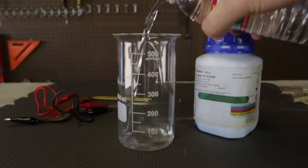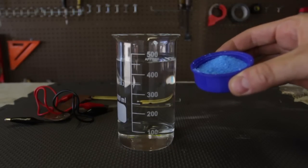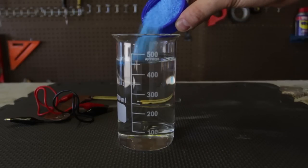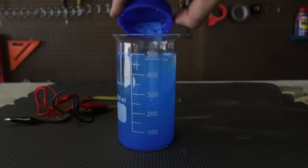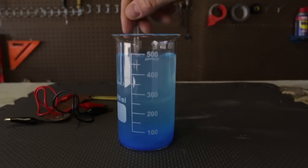First thing we're going to do is fill up the beaker with distilled water. Then we're going to get copper sulfate and pour it inside the distilled water. Then I got a stirring rod and I'm gonna mix it all up and wait till it all dissolves.